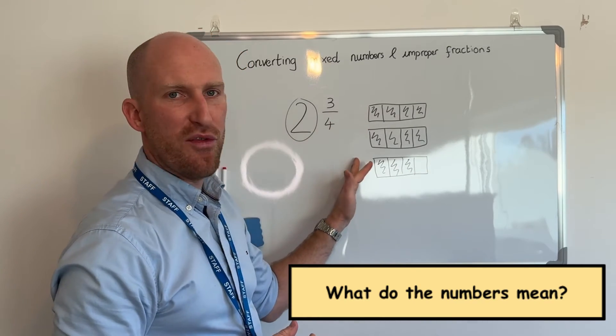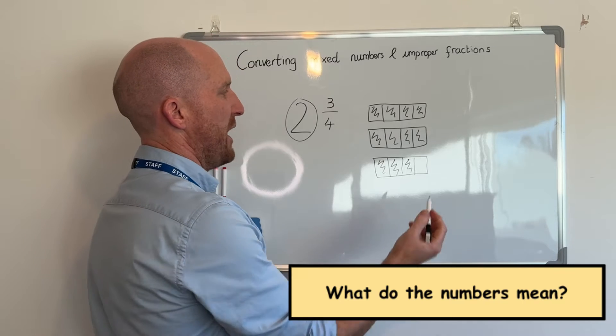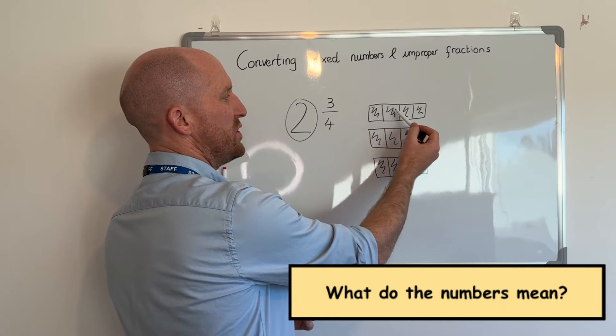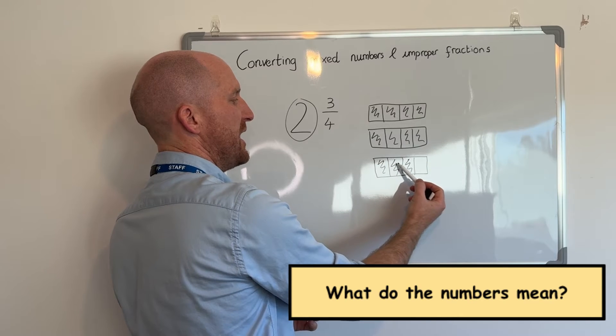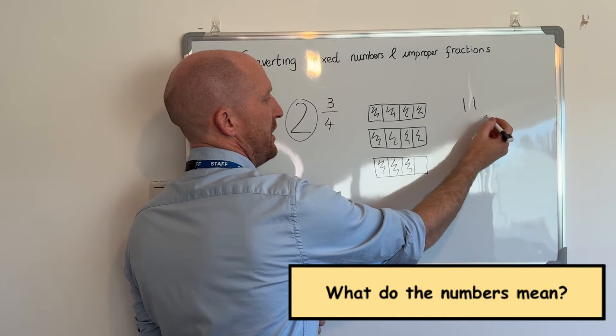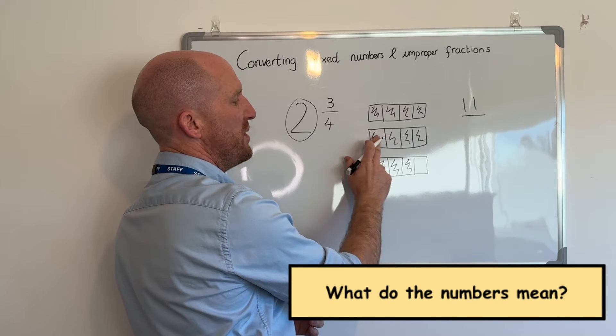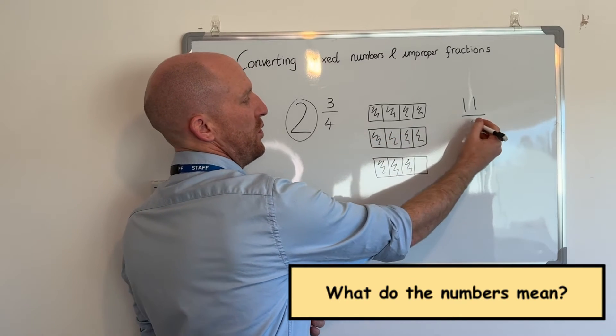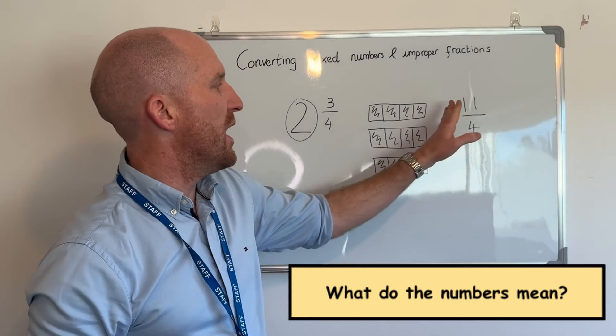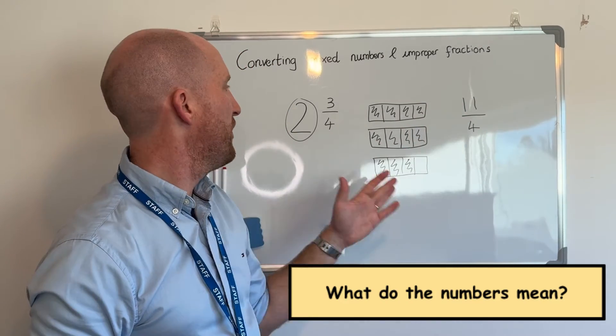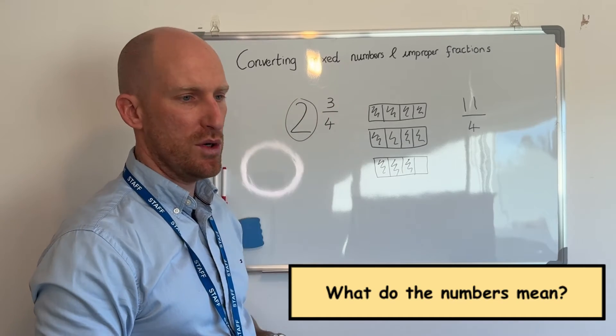Now as an improper fraction I would have to count how many pieces there are. So one, two, three, four, five, six, seven, eight, nine, ten, eleven. There are eleven. And the denominator would be four because each whole is chopped into four pieces. So eleven fourths is equal to two and three quarters.